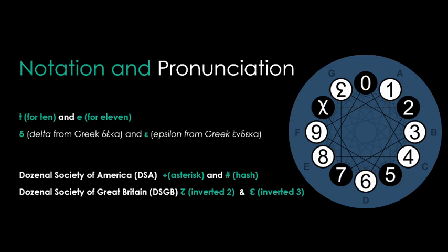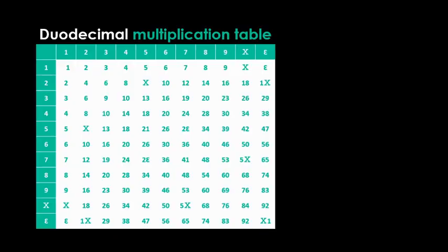By the way, the real name for a six-pointed asterisk is a sextile, and an eight-pointed hash is called an octothorn. I suggest that we start calling them by these names from now on. The last thing, then, is to actually show how basic arithmetic would work in a duodecimal system.